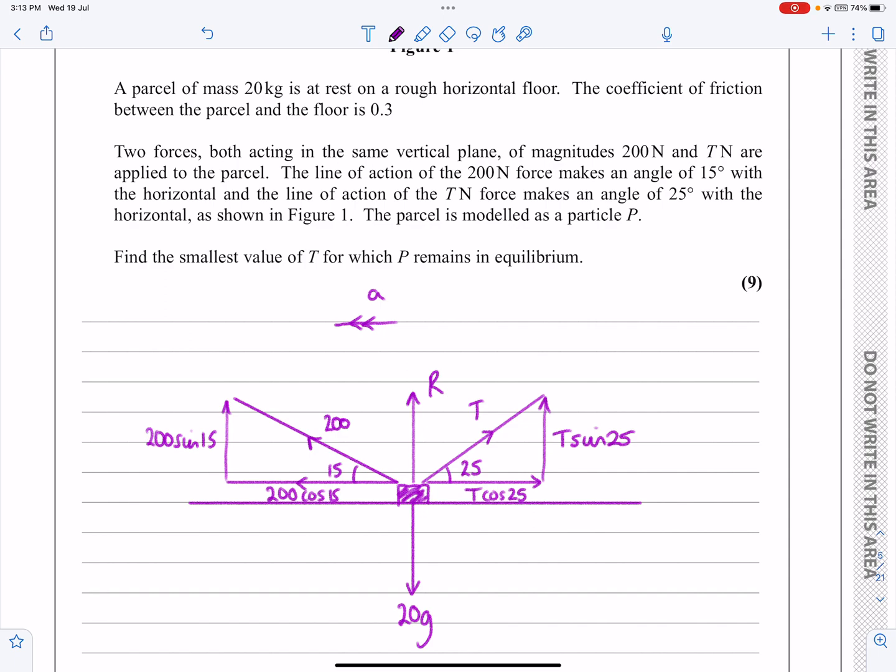This 200 cos 15 should be making it move to the left, but T is just big enough so that it keeps it in equilibrium. That means that the friction, if it is acting, is going to be acting in that direction there.